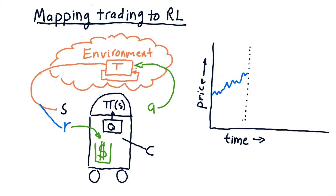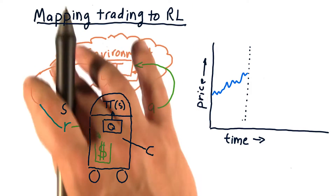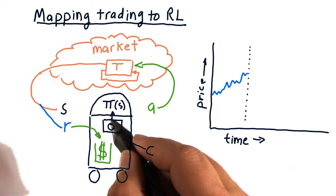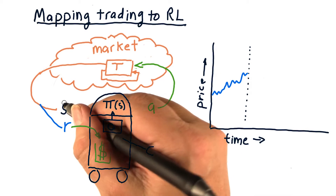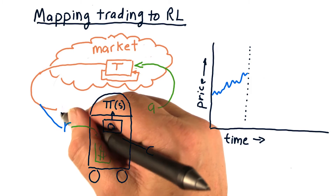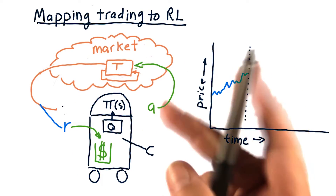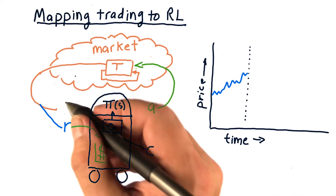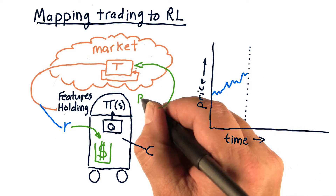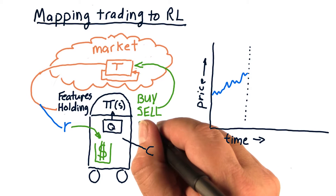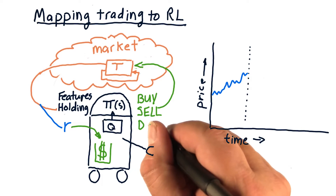Let's consider how we map trading to an RL problem. The environment here is really the market. Our state includes things like market features, prices, and whether we're holding the stock. Our actions are things like buy and sell, and potentially do nothing is also an allowable action.